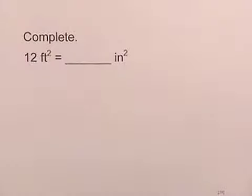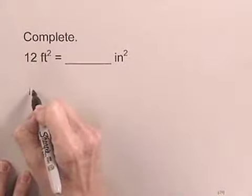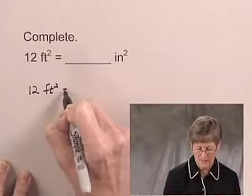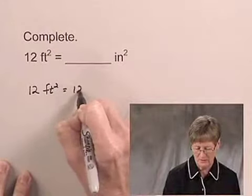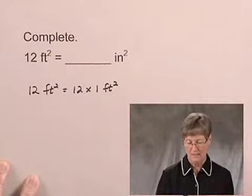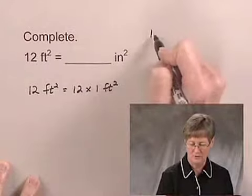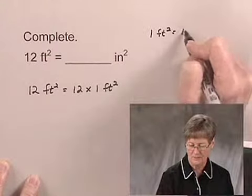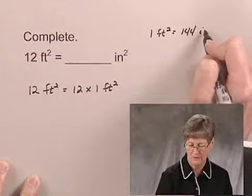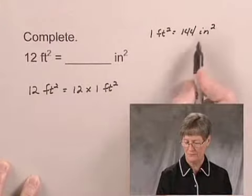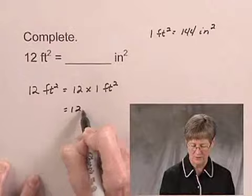In this exercise, we'll convert 12 square feet to square inches. So we begin with 12 square feet, and we can think of this as 12 times 1 square foot. Now, in the textbook, we're given the conversion factor that 1 square foot is equal to 144 square inches. So I can replace 1 square foot with 144 square inches.